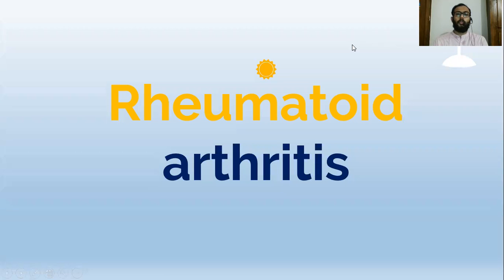Hi friends. In this video I would like to discuss the new updated ACR/EULAR criteria to diagnose rheumatoid arthritis. As rheumatoid arthritis is an autoimmune disorder that affects and destructs the joints, earlier detection and earlier diagnosis is very important. Both ACR and EULAR — the American College of Rheumatology and European League Against Rheumatism — have updated the criteria to detect rheumatoid arthritis.